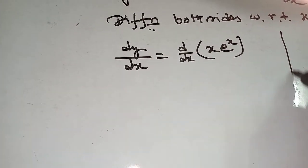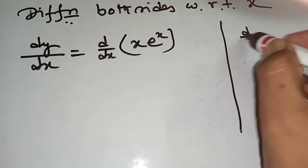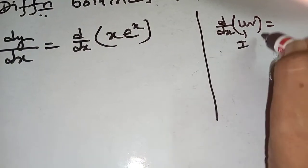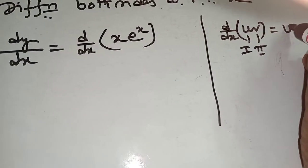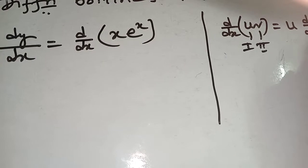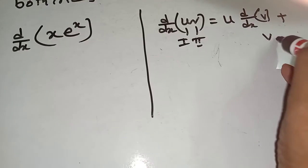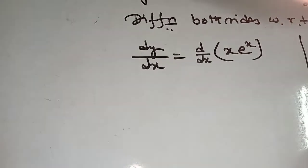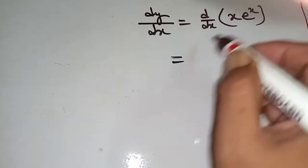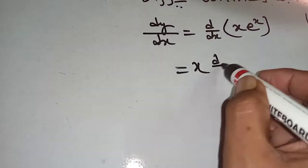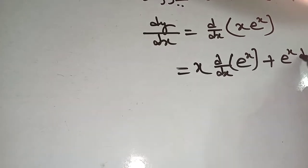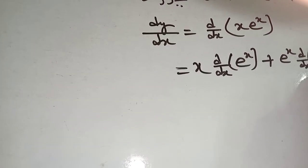What is the product rule? d/dx of u·v means: this is the first function and this is the second function. The formula is: first function times d/dx of second function, plus second function times d/dx of first function. Now apply this formula — this is the first function and this is the second function.